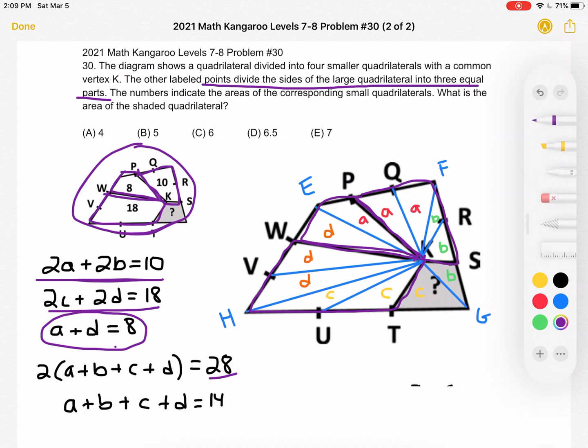So if we divide by 2 on both sides, we get that A plus B plus C plus D is equal to 14. And then again, we know that if we take A and D together, we get 8. And what we're really looking for is this area right here. The shaded area is B plus C.